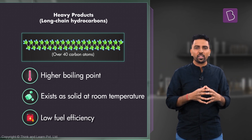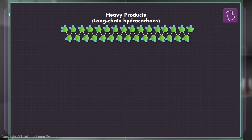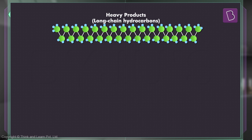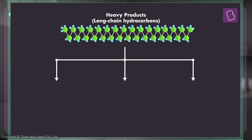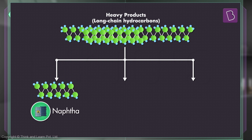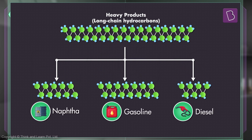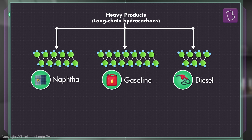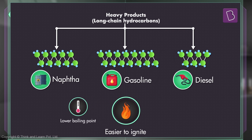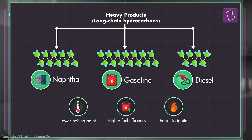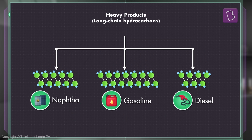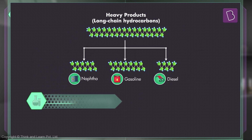Rather than discarding this waste, the mixture of long-chain hydrocarbons can be broken down into highly valuable lighter compounds such as naphtha, gasoline, and diesel, among others. These broken-down compounds have lower boiling points, so they are easier to ignite and hence immensely useful as fuels.